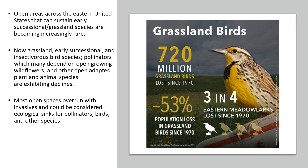Grassland birds have declined by 720 million individuals since 1970 — a population decrease of over 53 percent. This is extraordinarily serious. The eastern meadowlark, a common species, you used to see in all kinds of agricultural areas; you couldn't go by a telephone wire or fence row in farmland without seeing them. Well, three out of four of these birds are gone since 1970, and they're one of our species experiencing pretty rapid decline.